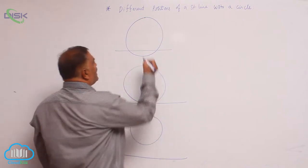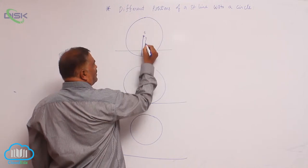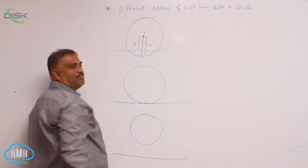In this case, this is the center, this is the radius, and this part is D, the perpendicular distance.